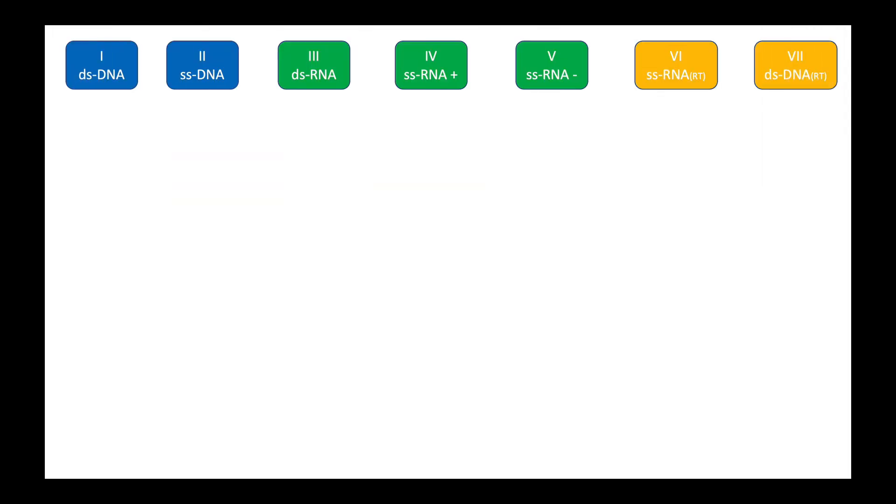So there you have it, the seven classes under the Baltimore classification. And under it, we can get all the pathogenic viruses.